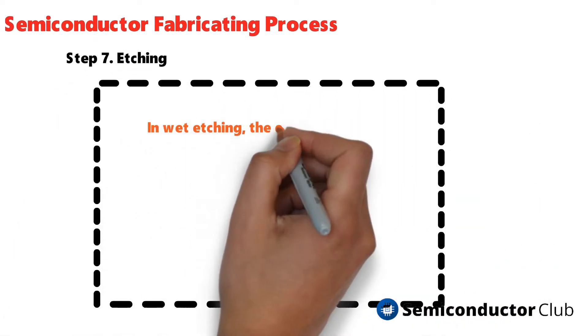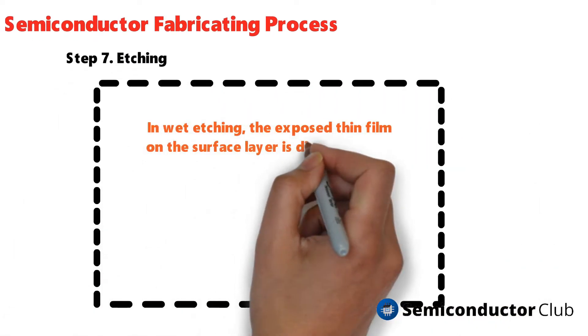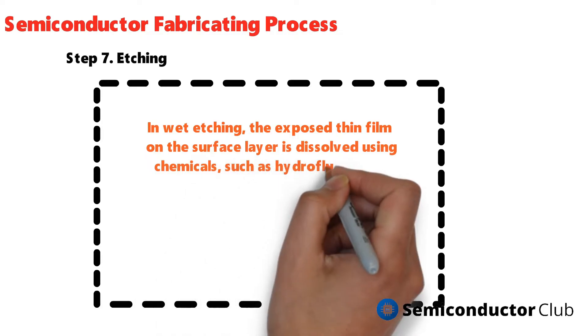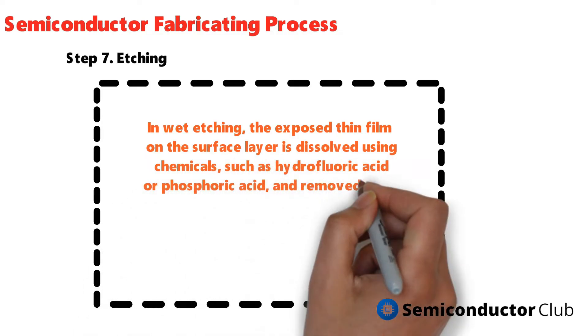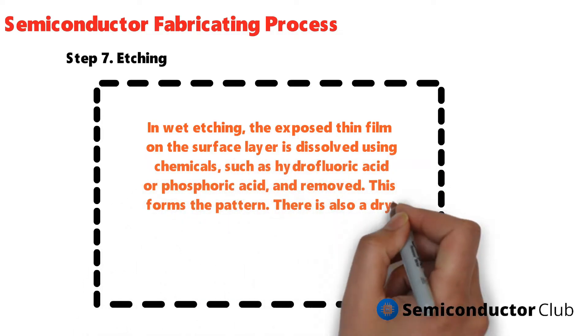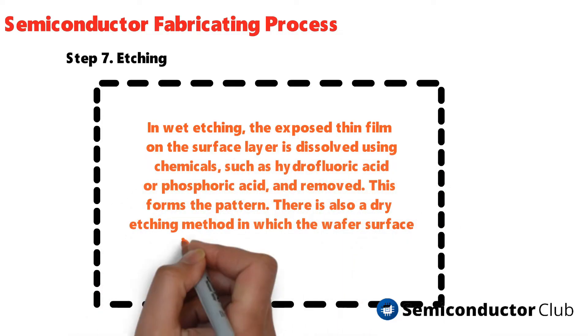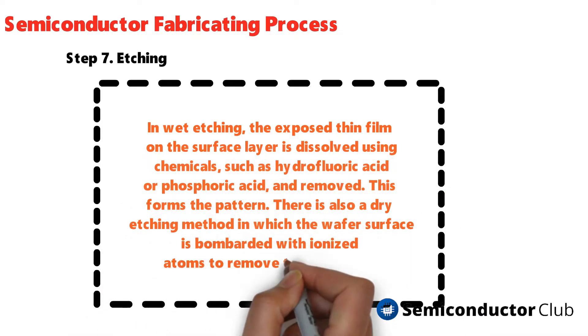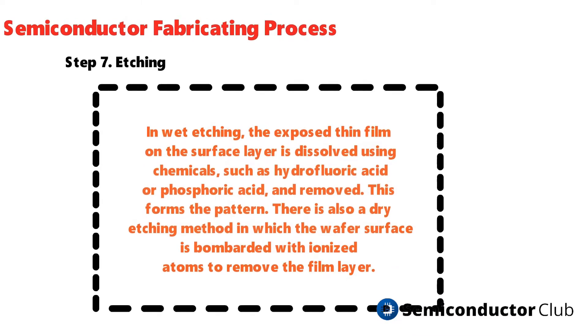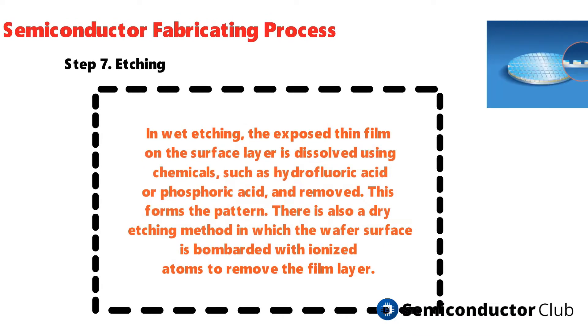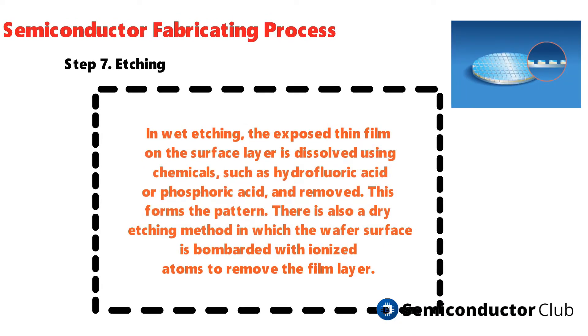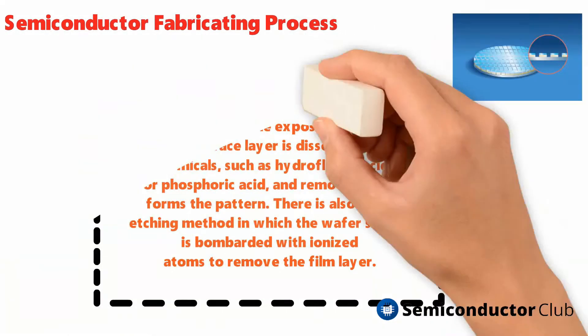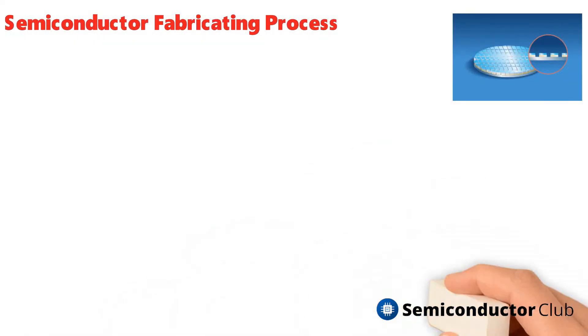Etching: in wet etching, the exposed thin film on the surface layer is dissolved using chemicals such as hydrofluoric acid or phosphoric acid and removed, forming the pattern. There is also a dry etching method in which the wafer surface is bombarded with ionized atoms to remove the film layer.